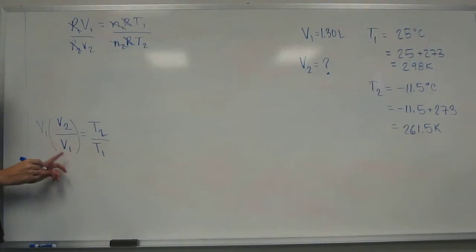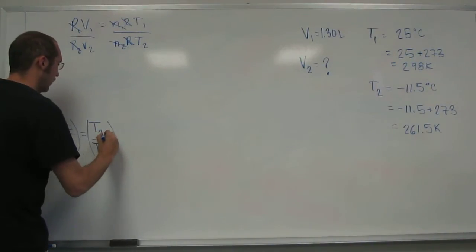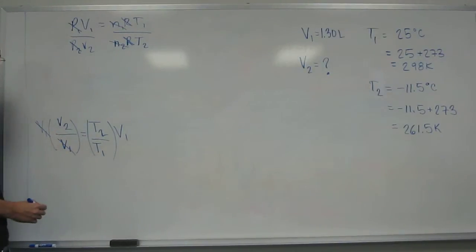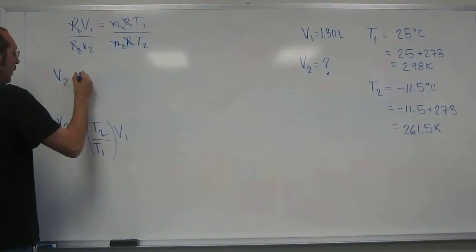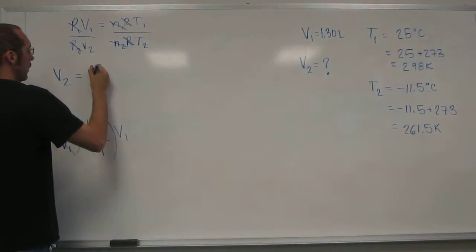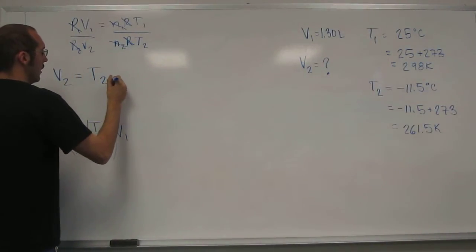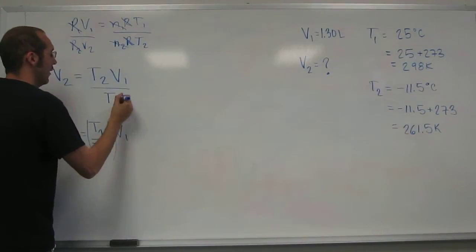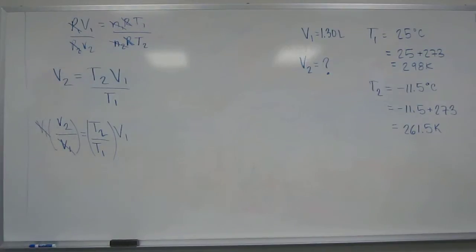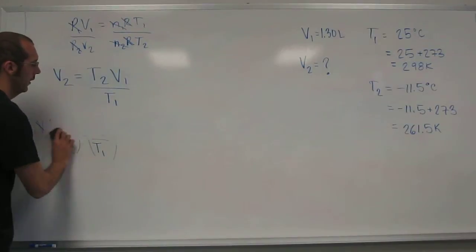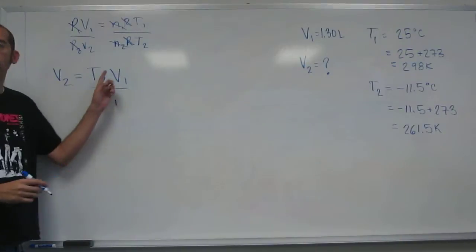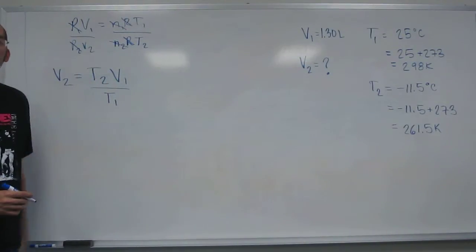So in order to now get V2 by itself, we multiply both sides by V1. Right? That'll cancel V1 out. So you can do anything to them, right? You just got to do it to both sides. So if we cancel V1 out like there, what's our new equation? V2 equals T2 V1 over T1. Is that right? Yes. Okay. So then we can erase that part. And then now it's easy. You just plug and chug. Okay?